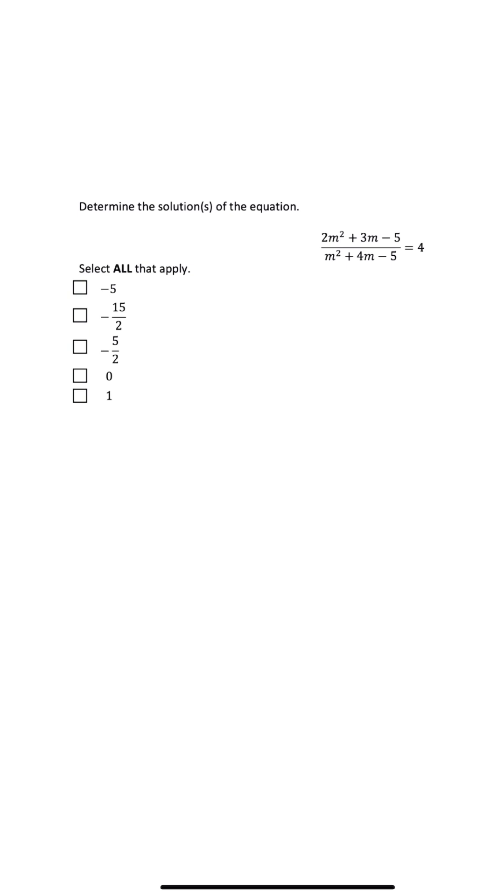Once we factor, we're going to get 2m plus 5 times m minus 1 on the top. When we factor the bottom, we're also going to get m plus 5 times m minus 1. And this is all going to be equal to 4.